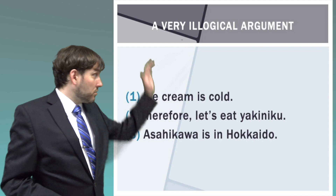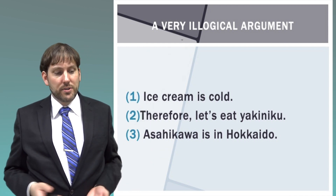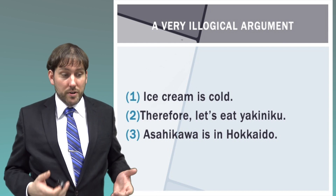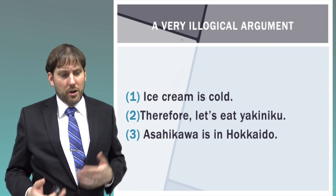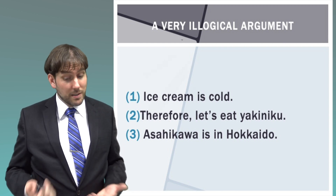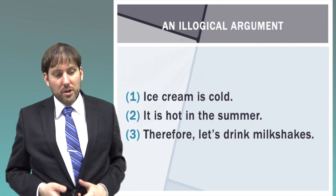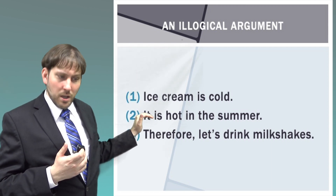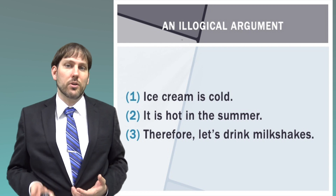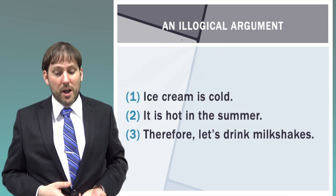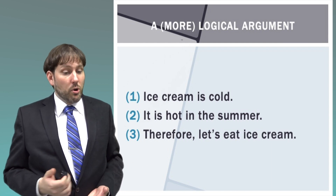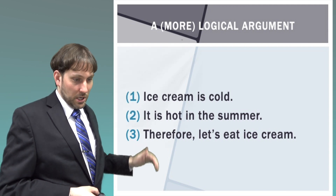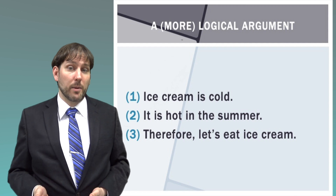Let me give you some example arguments. 'Ice cream is cold, therefore let's eat yakiniku, Asahikawa is in Hokkaido' — this does not follow any of the rules of a good argument. None of the premises are connected, the order is bad, the conclusion doesn't follow. A slightly better but still flawed version: 'Ice cream is cold, it is hot in the summer, therefore let's drink milkshakes.' We can figure out there's some connection between cold and hot, but it's not in the conclusion. The order is improved though. Now the logical version: 'Ice cream is cold, it is hot in the summer, therefore let's eat ice cream.' This is much better — we have ice cream, hot, and ice cream again, with clear patterns to work from.